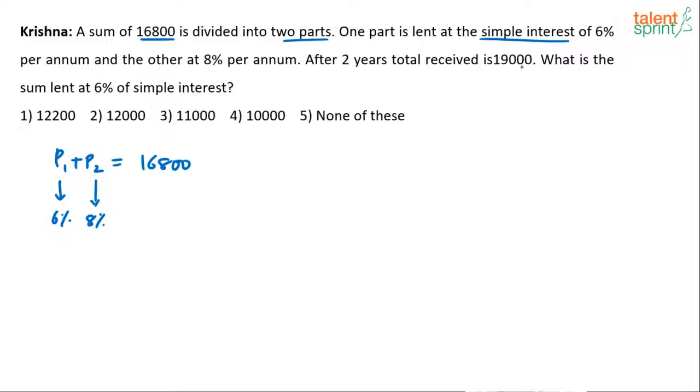After two years, the total received is 19,000. What is the sum lent at 6% simple interest? That's P1.